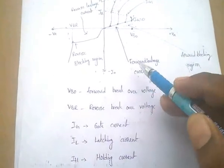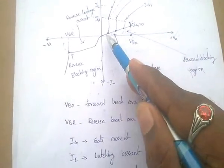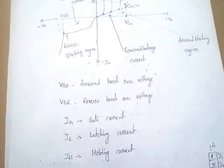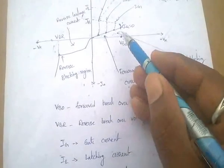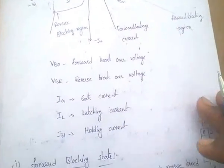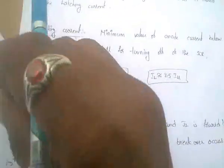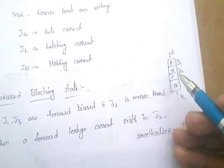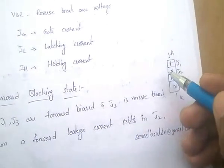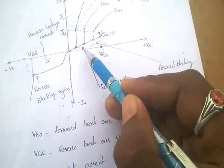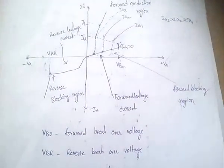Coming to the states of SCR: in the forward blocking region, junctions J1 and J3 are forward biased and J2 is reverse biased. A very small leakage current exists due to J2, flowing up to VBO. This region is called the forward blocking region and the current is the forward leakage current.